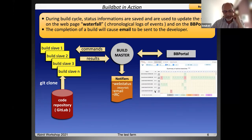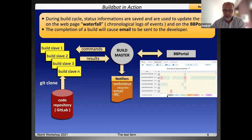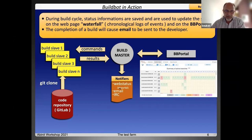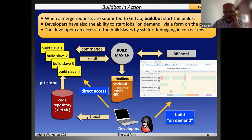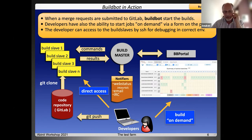During the build cycle, the status information is saved in the database. We use this data to update the state of the Buildbot Portal and status of results. When the task is complete, there is also the possibility to send an email, and we can also see the result in the waterfall — a special web status. When a merge request made by a developer is submitted to GitLab, the build starts automatically and executes all the tests. The developer also has the possibility to start a job on demand via a form on the portal.